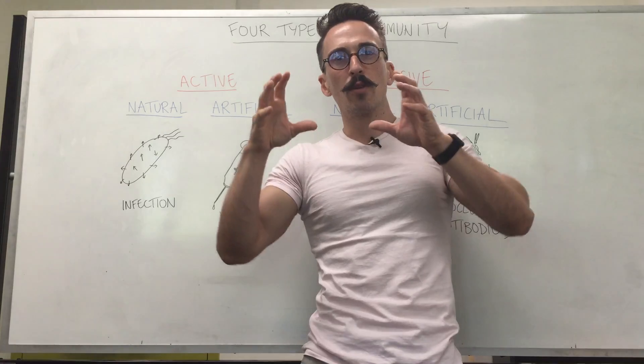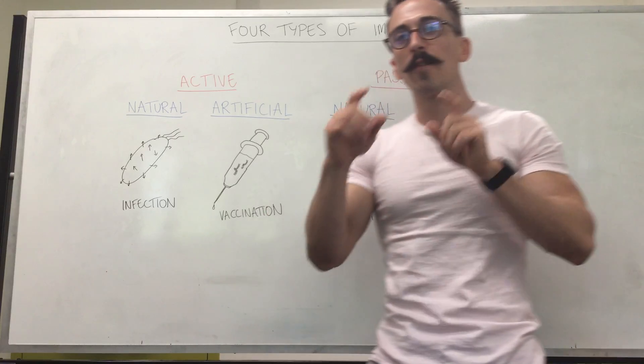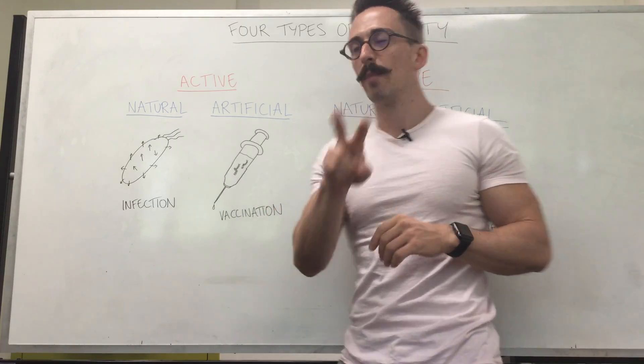So how do we create or acquire this immunological memory? Well, there are four different ways. You can first break these four different ways up into two major types, the active and the passive.